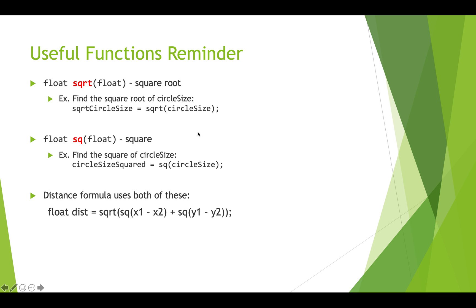A couple of useful functions to remind you of: square root - you can pass in a float and it will give you the square root of that number. And square, which almost seems silly, but there is a function that can make your code a little shorter and more readable. These are both used in the distance formula, the Pythagorean theorem. Distance equals the square root of the square of the x difference and the square of the y difference.